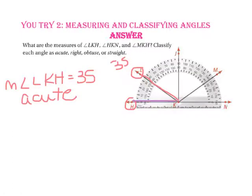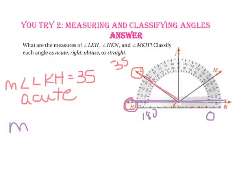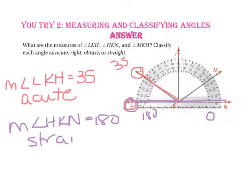Here is angle HKN. On the inside ring, ray KH is at 180 degrees. Following that around on the inside ring to ray KN, it is at 0. So the measure of angle HKN is 180 degrees. Since it is exactly 180 degrees, that is a straight angle.